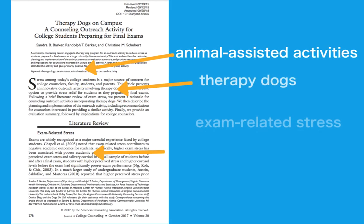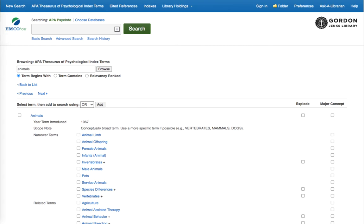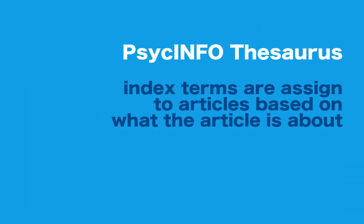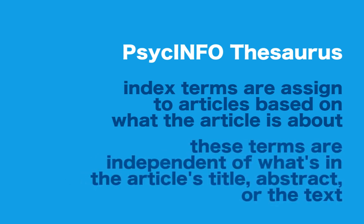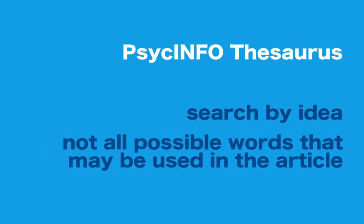If you're new to your research area, you might not necessarily know the terms to search for — the Thesaurus can help you out. It sorts through these concepts and finds the industry terms used for your topic area. APA indexers assign index terms, which are word entries in the Thesaurus that capture what an article is about regardless of the terms that appear in the title, the abstract, or the text. This means you just need to know the idea you are searching for, not all of the possible words the author may have used in their paper.